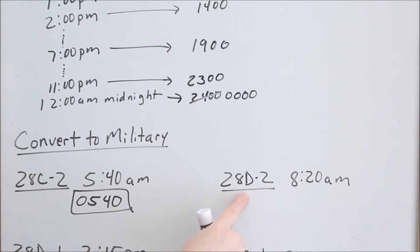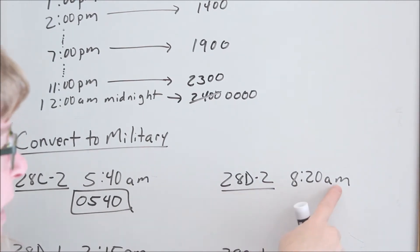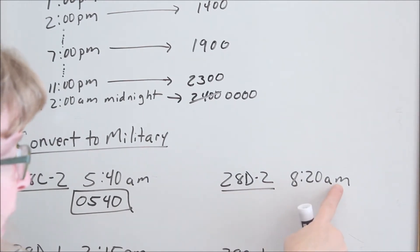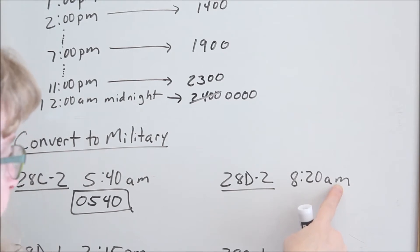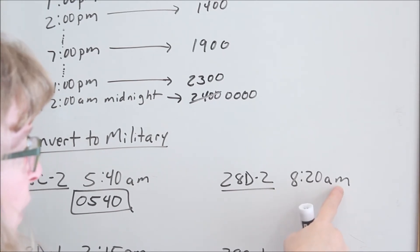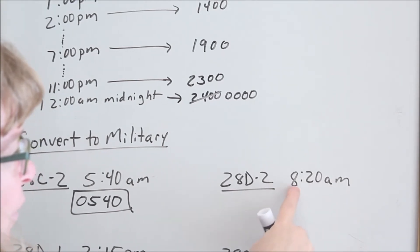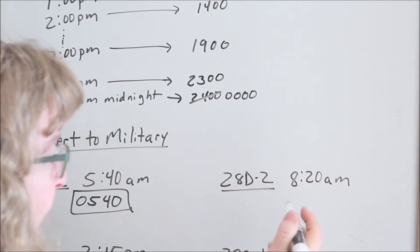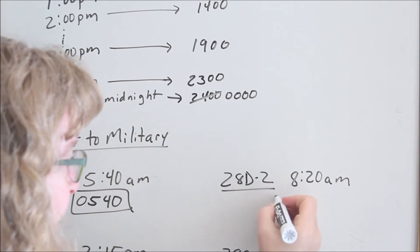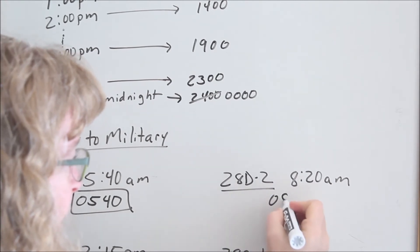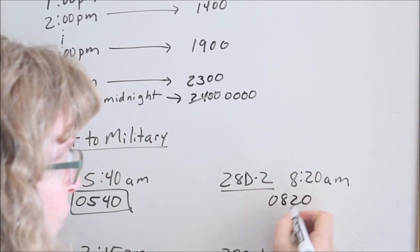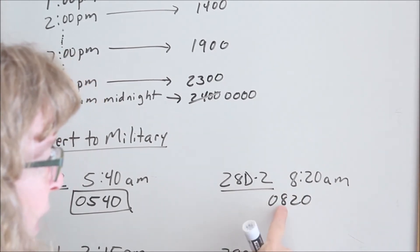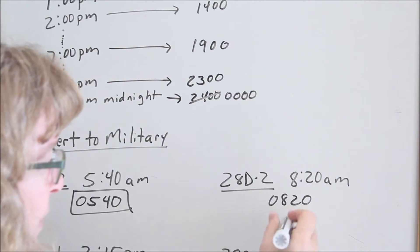Looking at 8:20 a.m. — you have to ask, are you in the morning or in the afternoon? We're in the morning, so we're in the 8th hour of the day. So 0800 and then 20 minutes — 0820. The first two digits are the hours; the last two are the minutes.